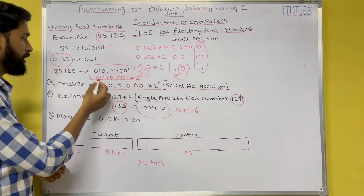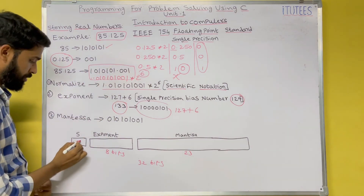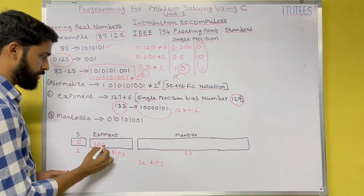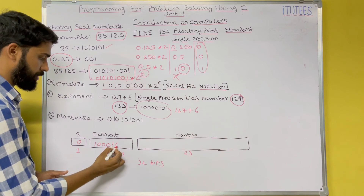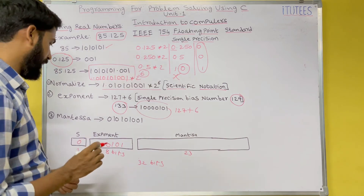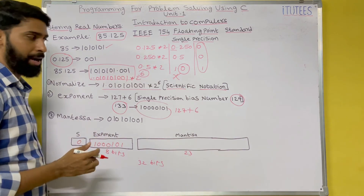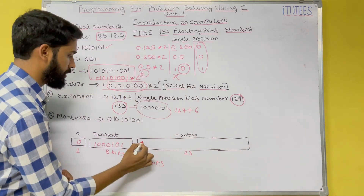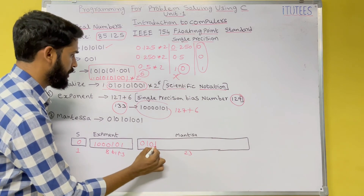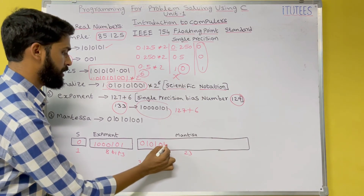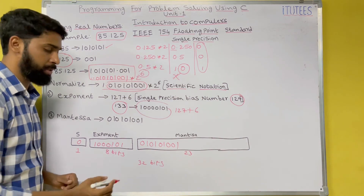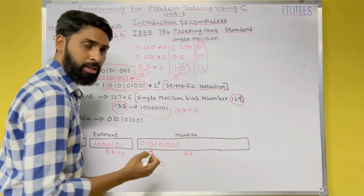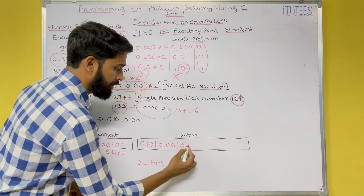The sign of the number is positive, so the sign bit is 0. The exponent field is 10000101. The mantissa is the fractional part after the leading 1: 010101001. Since the mantissa field requires 23 bits, we pad the remaining 14 bits with zeros, giving us 01010100100000000000000.